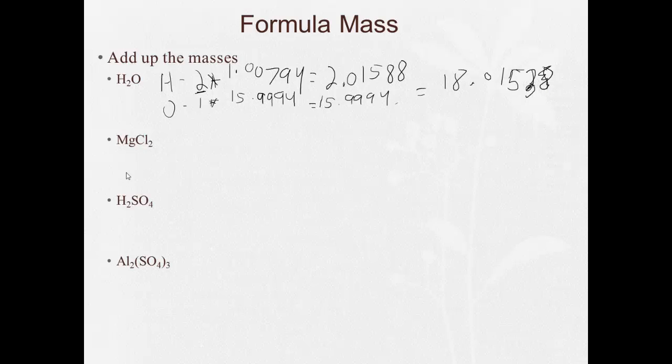MgCl2. All right, so I look up on my periodic table and see magnesium is 24 point... Wow, those eyes are old. I actually have to use a magnifying glass to see this, it's pretty bad. All right, so magnesium, 24.305.